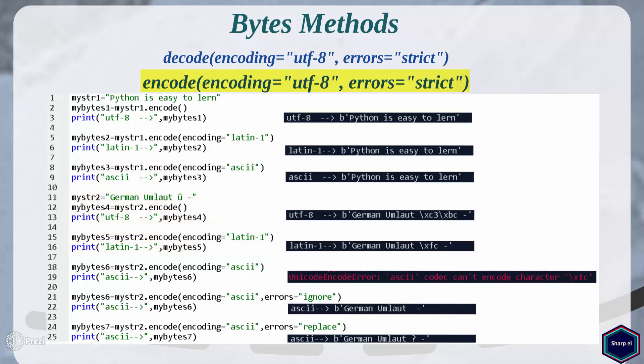Using encode method and a suitable encoding set, you can convert a string object into a bytes object, which is nothing more than a sequence of bytes. The encode method is useful when you want to transfer data from one system to another — you simply convert the data into bytes, transfer it, and then convert it back into data on the other system.